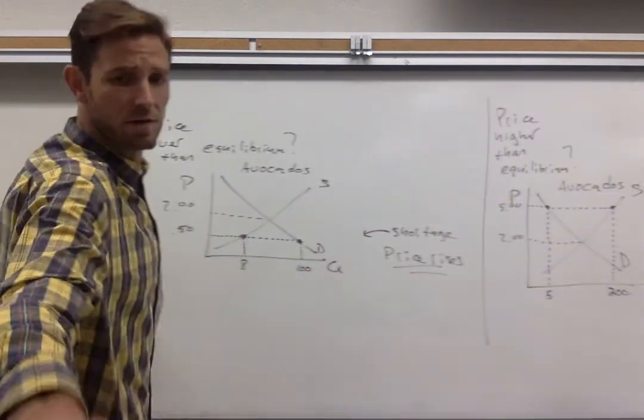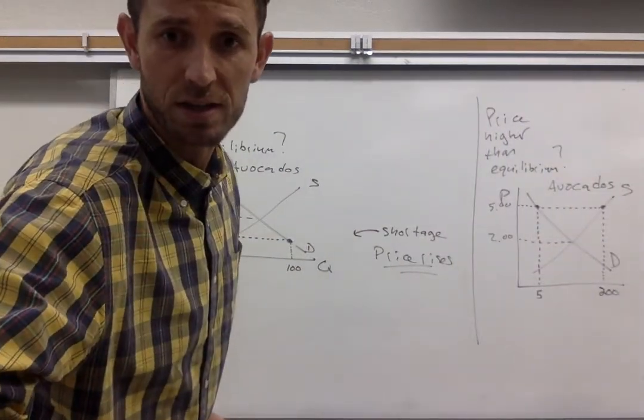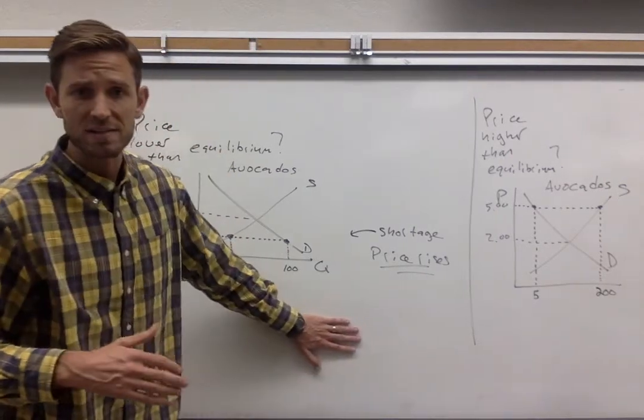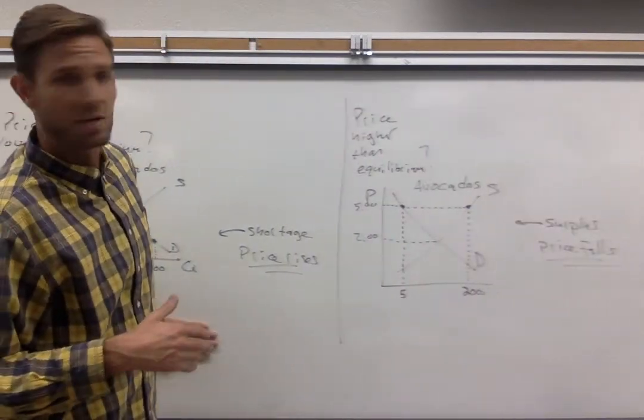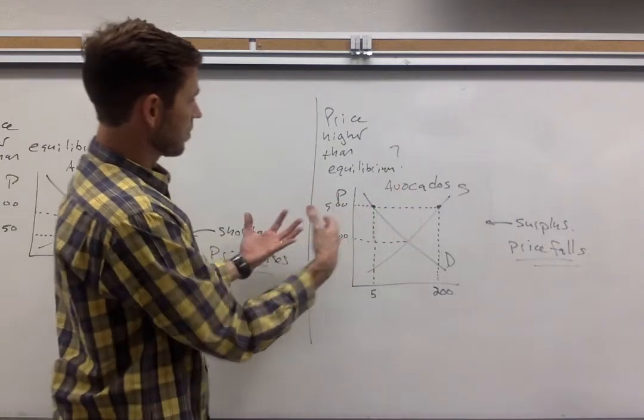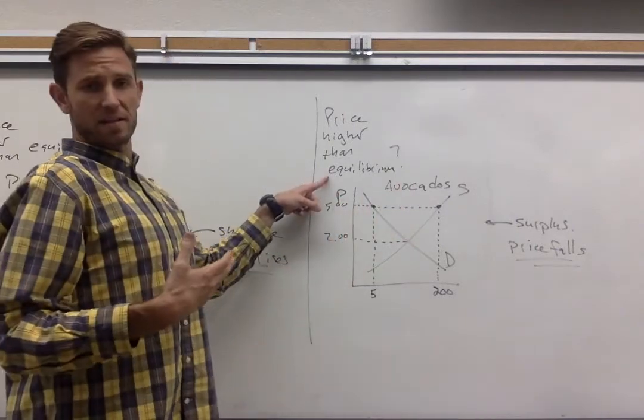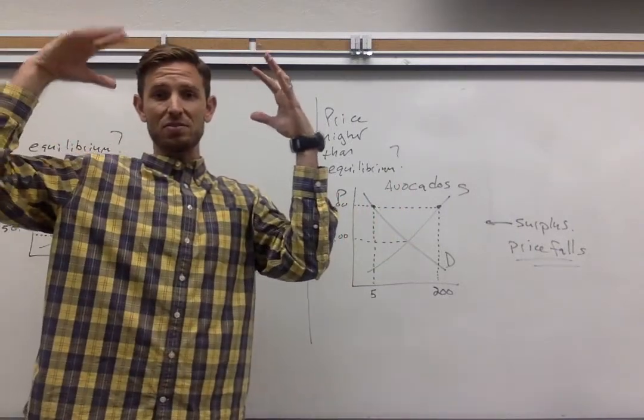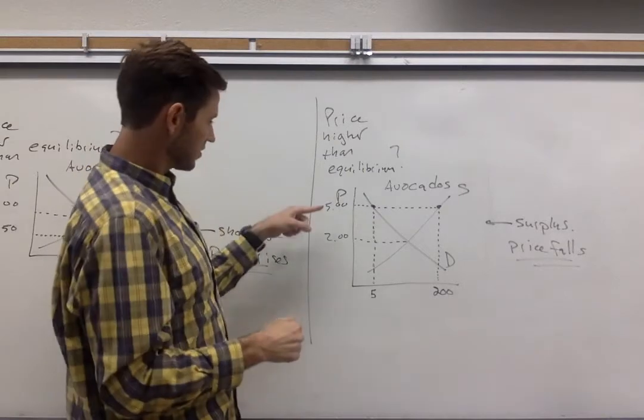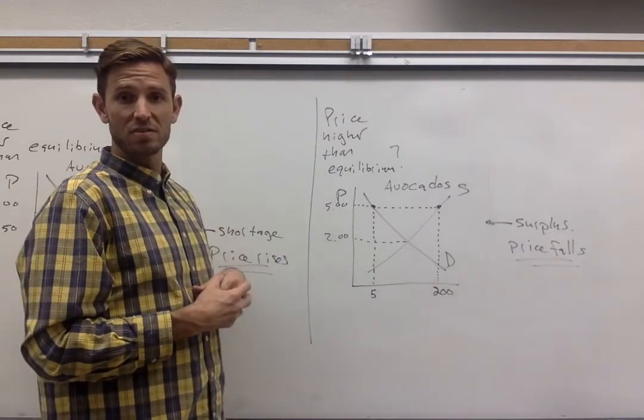The logic is really similar for thinking about reasons why or thinking about the explanation for why we wouldn't see a price up above that equilibrium for too long. So I'm just going to slide this over a little bit now and think about a situation where we have really high prices relative to the equilibrium. So now let's assume that the price of avocados is up at five bucks.